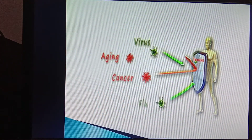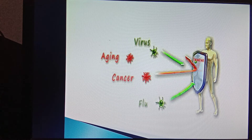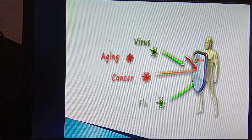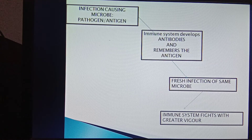When an infection-causing microorganism, that is a pathogen or antigen, enters our body, our immune system develops antibodies against it to fight the infection. It also remembers the antigen specifically. When the same infection occurs next time, our immune system responds to it with greater vigor or force, and this removes the infection quickly.